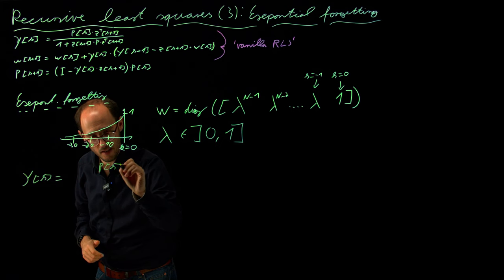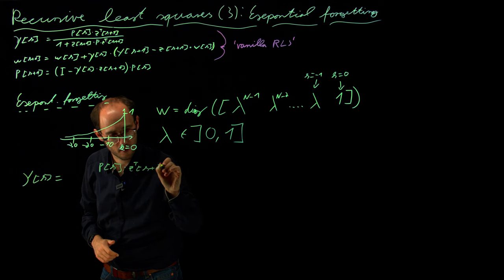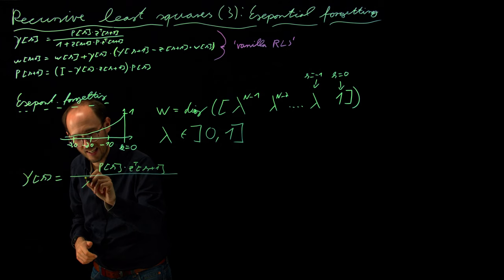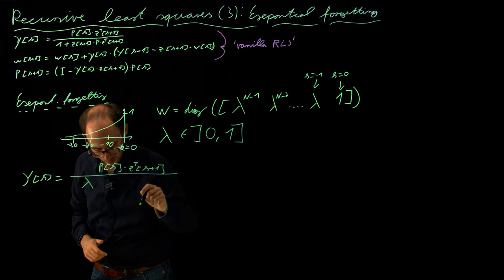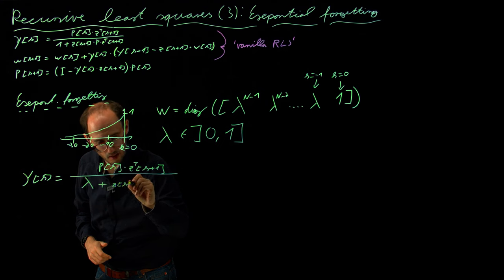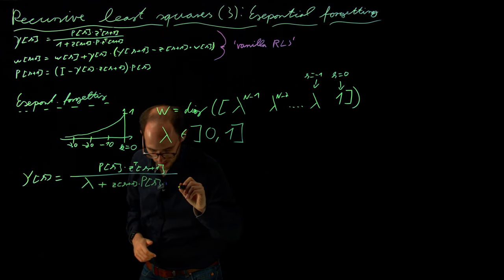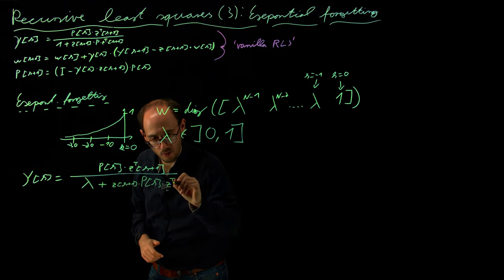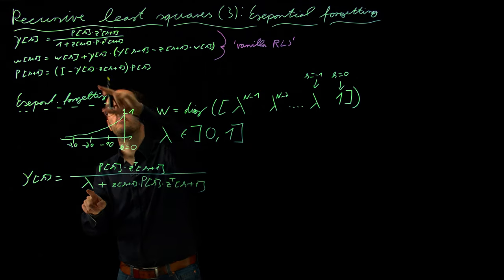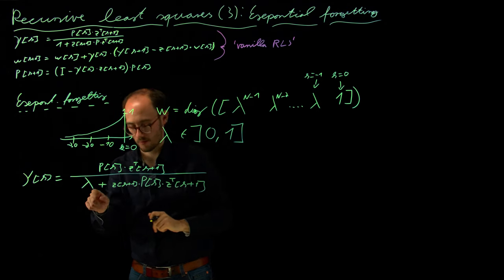is pk times z transpose k plus 1 and in the lower part of the fraction we get lambda, so our forgetting factor, plus z k plus 1 times pk times z transpose k plus 1. So here we see just a minor change, this one which we had in the vanilla recursive least squares is exchanged here for the lambda.